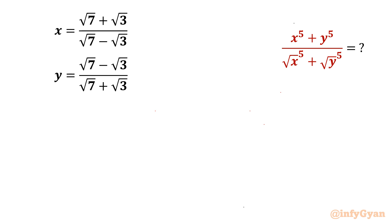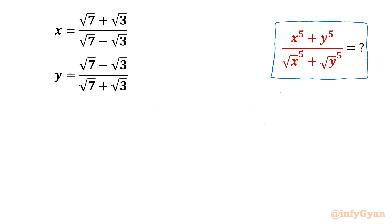Welcome to Infigyan, my dear friends. Today in this video we are going to take up one very interesting and challenging radical expression. x and y are given to us, and we have to simplify the expression: x⁵ + y⁵ over √(x⁵) + √(y⁵).